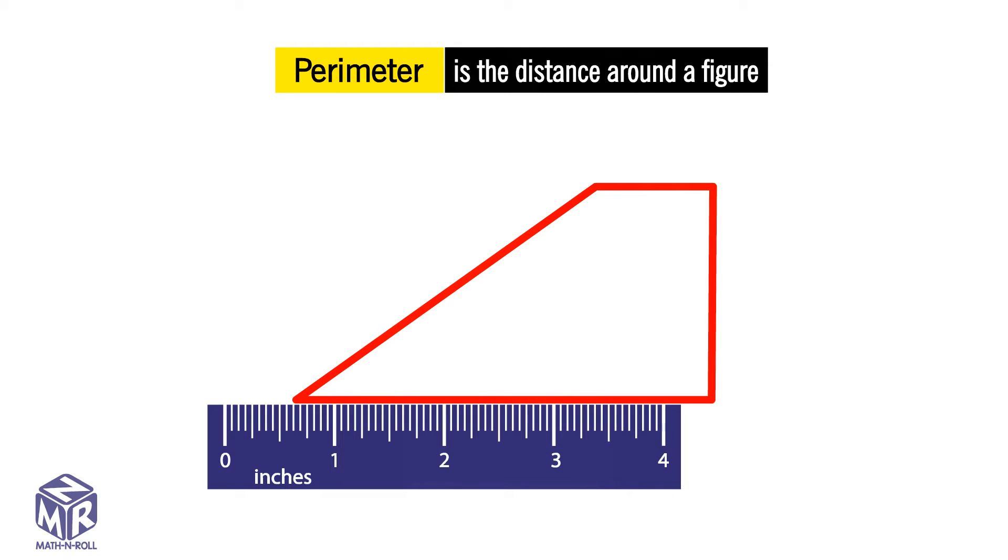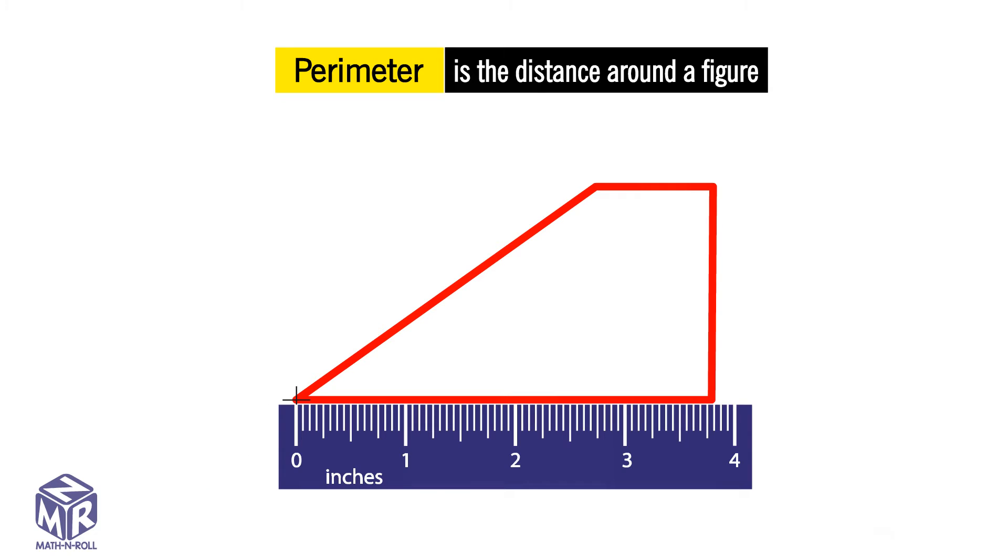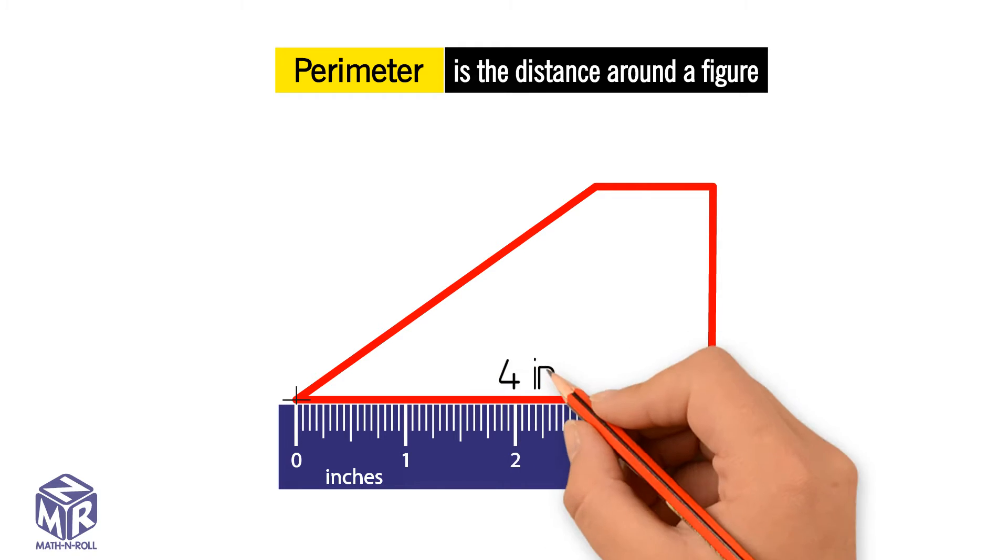We can use an inch ruler to measure the length of each side to the nearest inch. Mark the starting point. Line up the starting point with the zero mark on the ruler. The length of the first side is close to 4 inches, so we write 4 inches on this side.